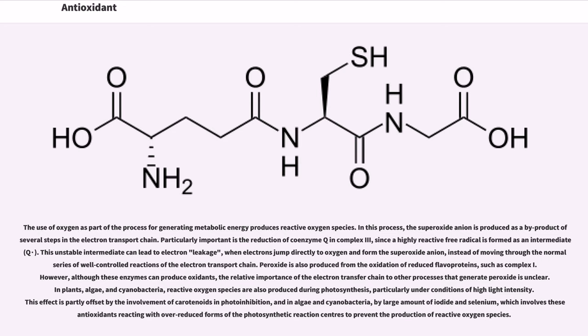The use of oxygen as part of the process for generating metabolic energy produces reactive oxygen species. In this process, the superoxide anion is produced as a byproduct of several steps in the electron transport chain. Particularly important is the reduction of coenzyme Q in complex 3, since a highly reactive free radical is formed as an intermediate, Q•. This unstable intermediate can lead to electron leakage, when electrons jump directly to oxygen and form the superoxide anion, instead of moving through the normal series of well-controlled reactions of the electron transport chain. Peroxide is also produced from the oxidation of reduced flavoproteins, such as complex I. However, although these enzymes can produce oxidants, the relative importance of the electron transfer chain to other processes that generate peroxide is unclear.